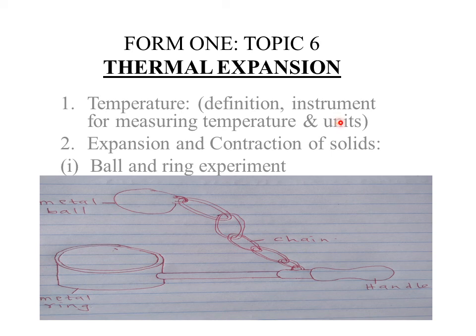Kelvin is a scalar quantity. A scalar quantity is a quantity that has magnitude or size only, but it does not have direction. Next, we look at expansion and contraction of solids. Expansion means to increase in size or volume — volume being the amount of space occupied by a body. To contract is the opposite: it means to decrease or reduce in size.